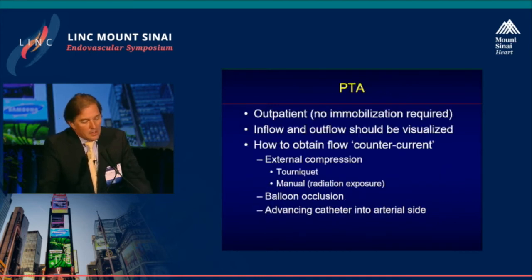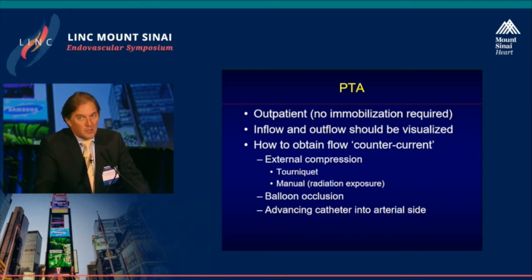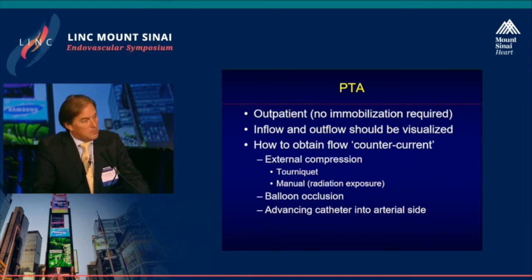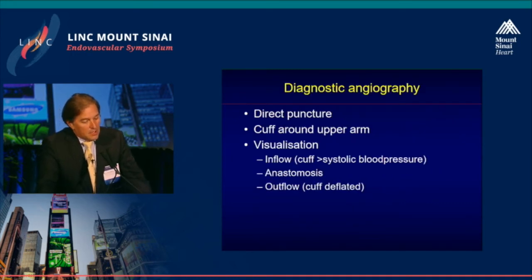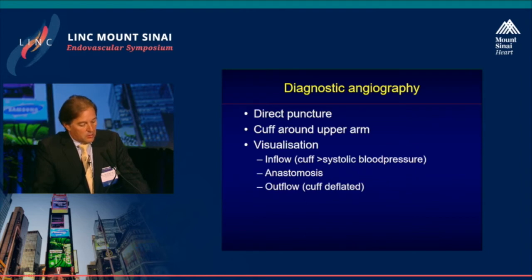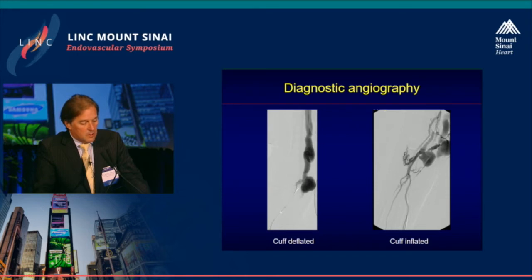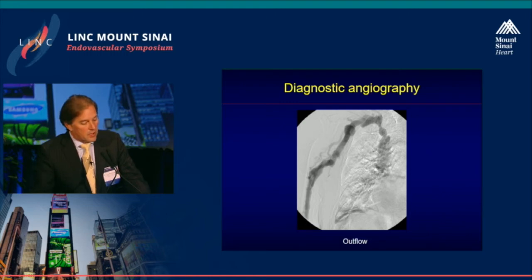The typical way I perform the procedure is on an outpatient basis — no immobilization is needed afterwards. Inflow and outflow should be visualized, and you are faced with the problem of getting flow counter-current. This can be done using external compression by a tourniquet or with manual compression, but take care not to put your hands inside the x-ray beam. You can also use balloon occlusion. On the left-hand side you can see an image with the cuff deflated — no arterial inflow is seen — but when you inflate the cuff you can see the backflow of contrast into the arterial side.